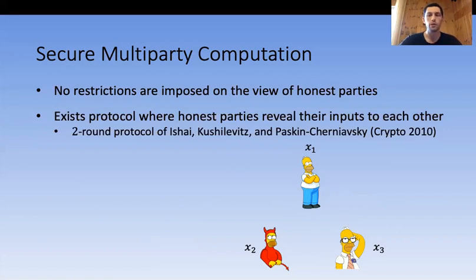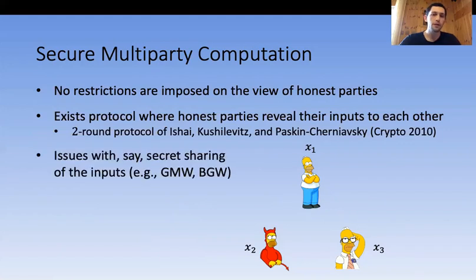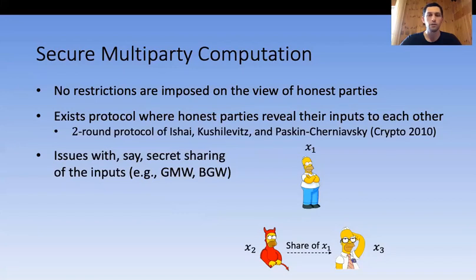Even if we ignore those protocols and use only classical protocols like GMW or BGW, there is still a problem with secret sharing. A corrupted party can send its share to other honest parties, allowing them to recover the original input of another honest party — which again could later lead to violence.